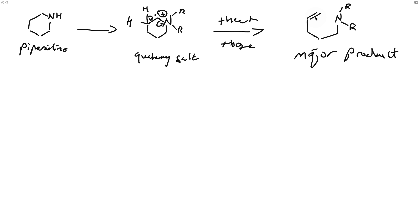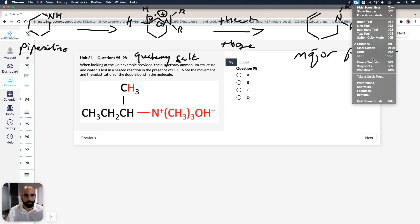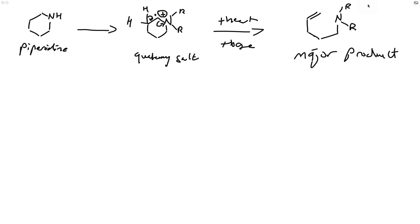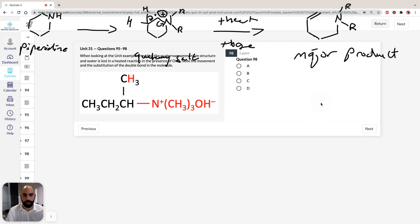So we've made the nitrogen happy by giving it an electron, made the carbon happy by giving it an electron, and the hydrogen goes away — forming the double bond. This is our major product. Going back to question 98 and looking at the answer options — cyclopentane, 1-pentene, 1-pentene — none of these actually fit this compound. So the major product is not A, B, or C. That's the trick here. The answer for 98 has to be D.